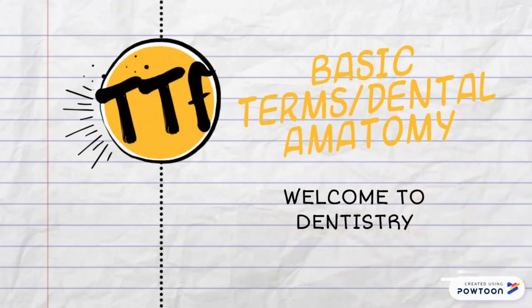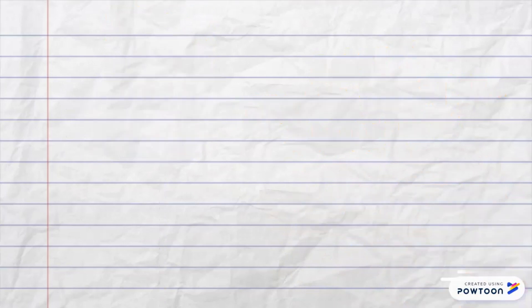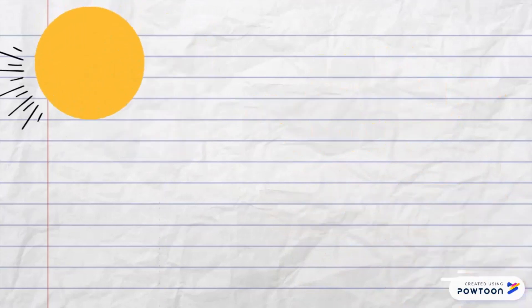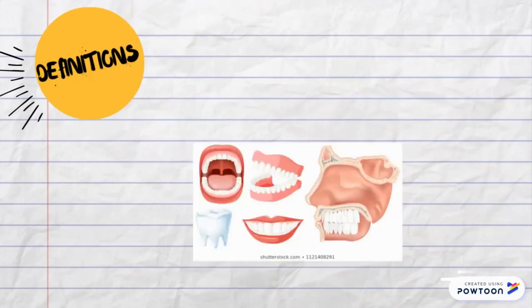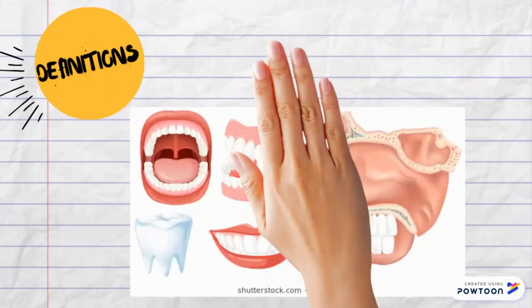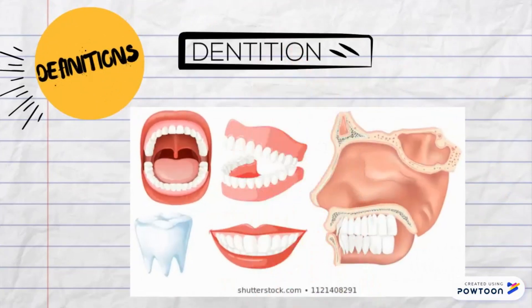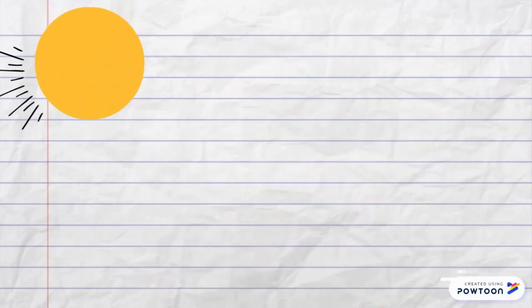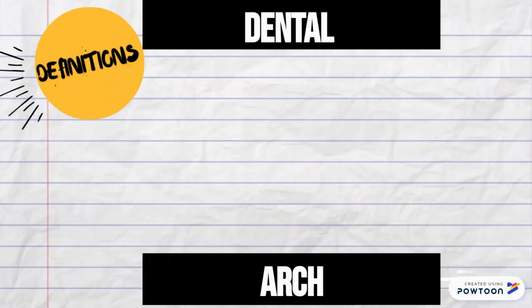Let's start with the definitions today. Number one: what is a dentition? Dentitions are the arrangements of natural teeth or arrangements of artificial teeth such as dentures. There are two types: deciduous and permanent, over a lifetime. Number two: what is a dental arch? It is the part of the jaw which gives attachment to the roots of the teeth. Therefore, there are two jaws — upper and lower, or maxillary and mandibular.